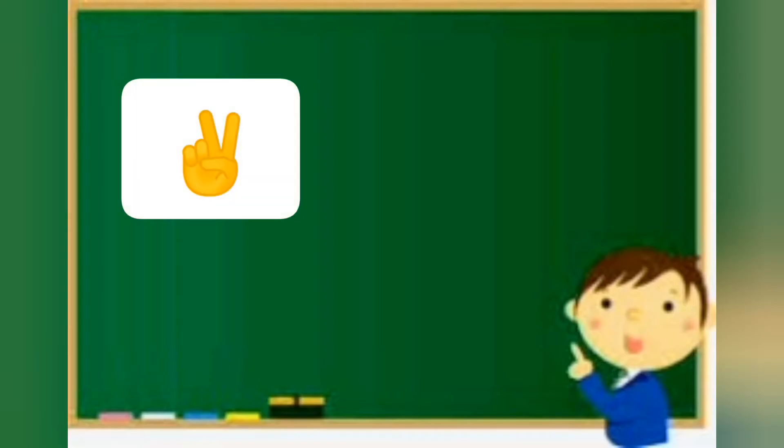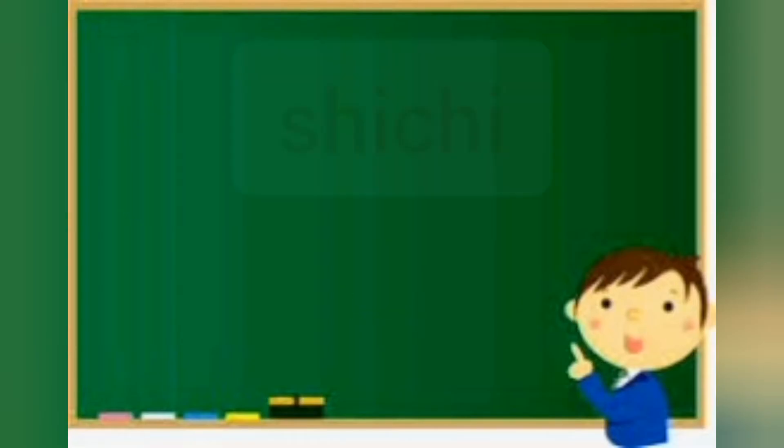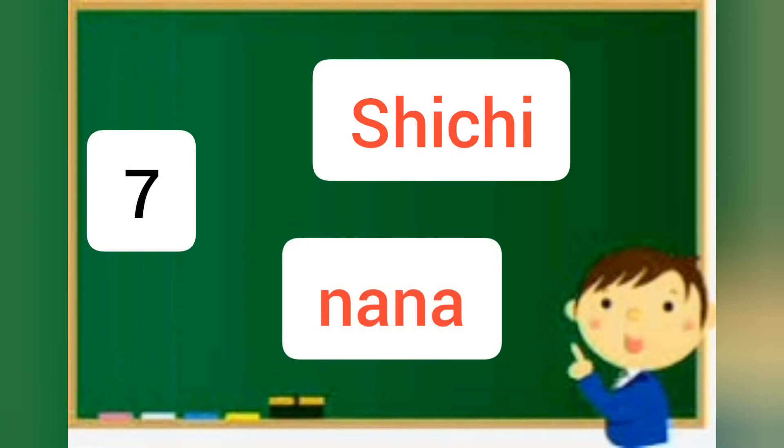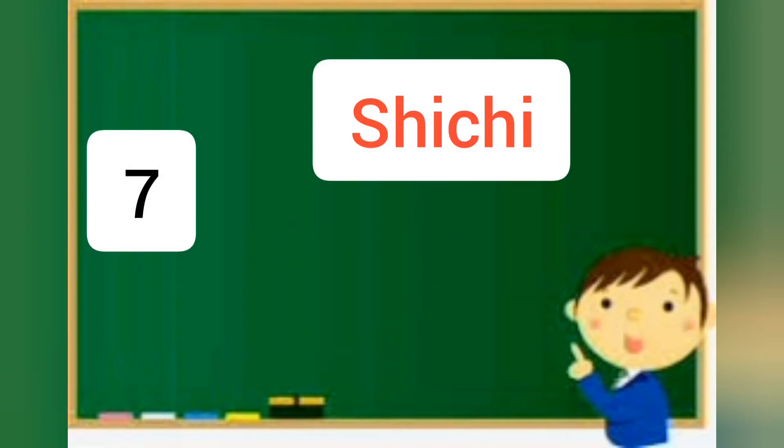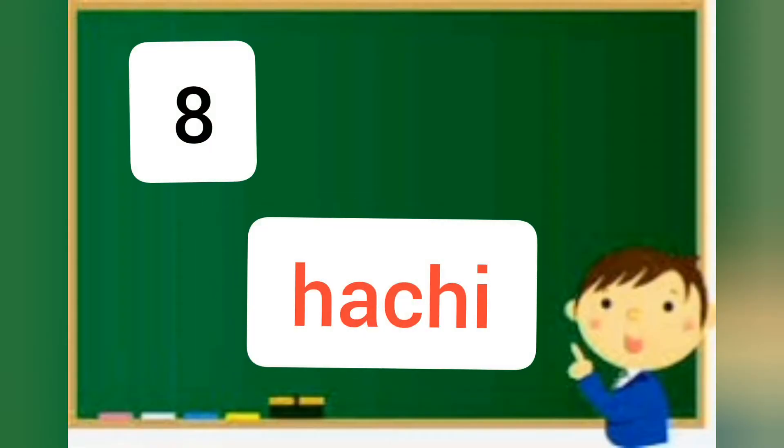Again, we have two ways to count number seven in Japanese: shichi or nana. Generally we use shichi to count number seven. Number eight we say hachi in Japanese. Number eight is hachi.